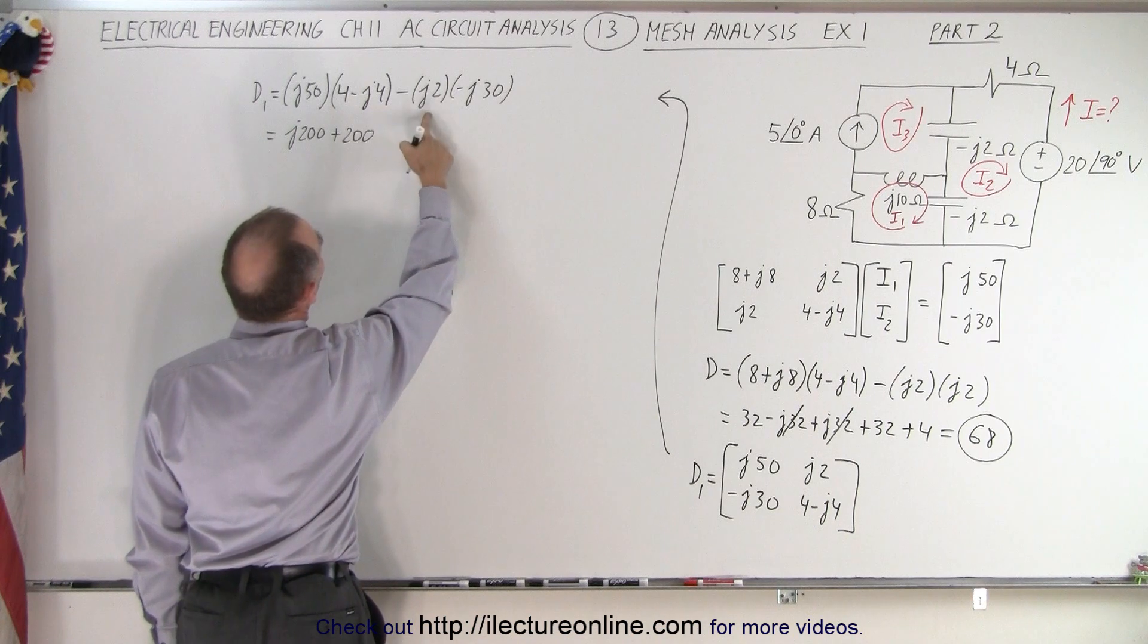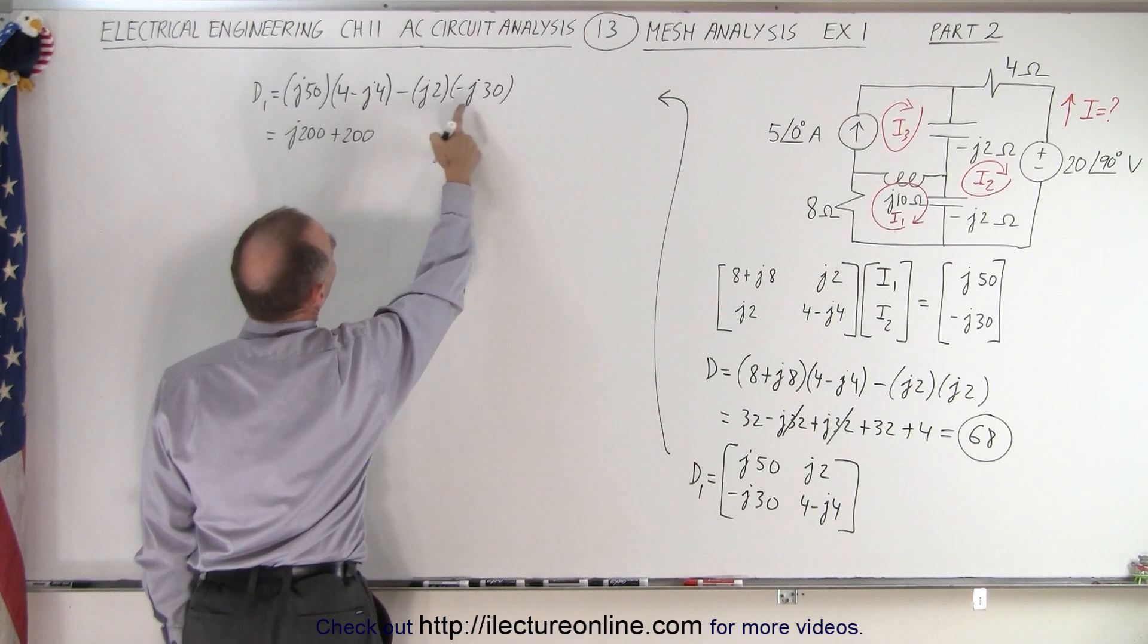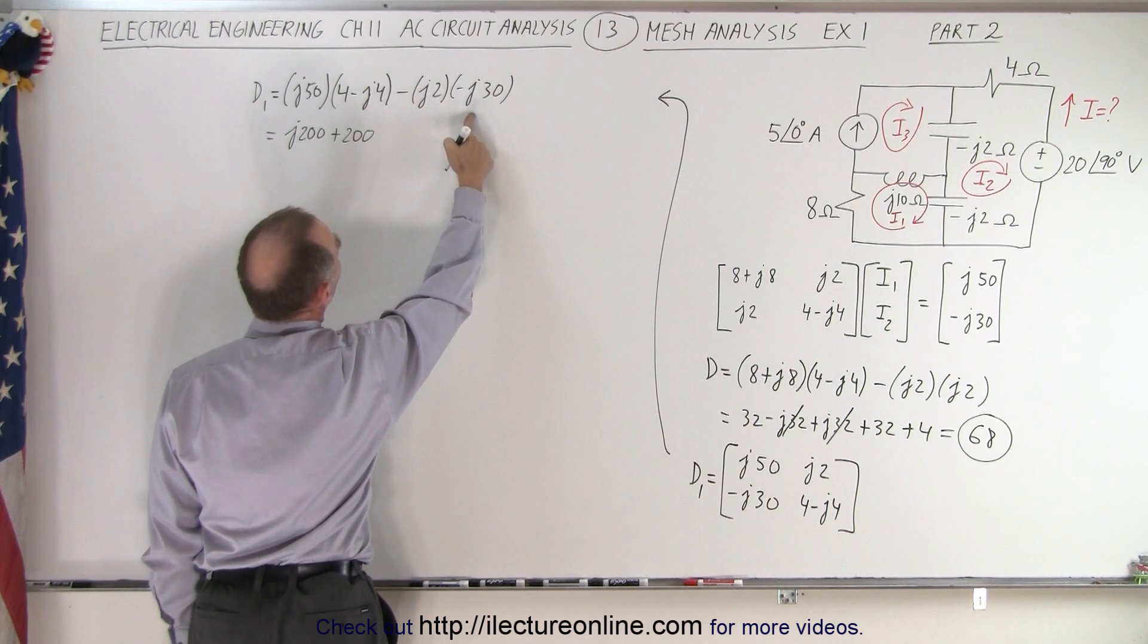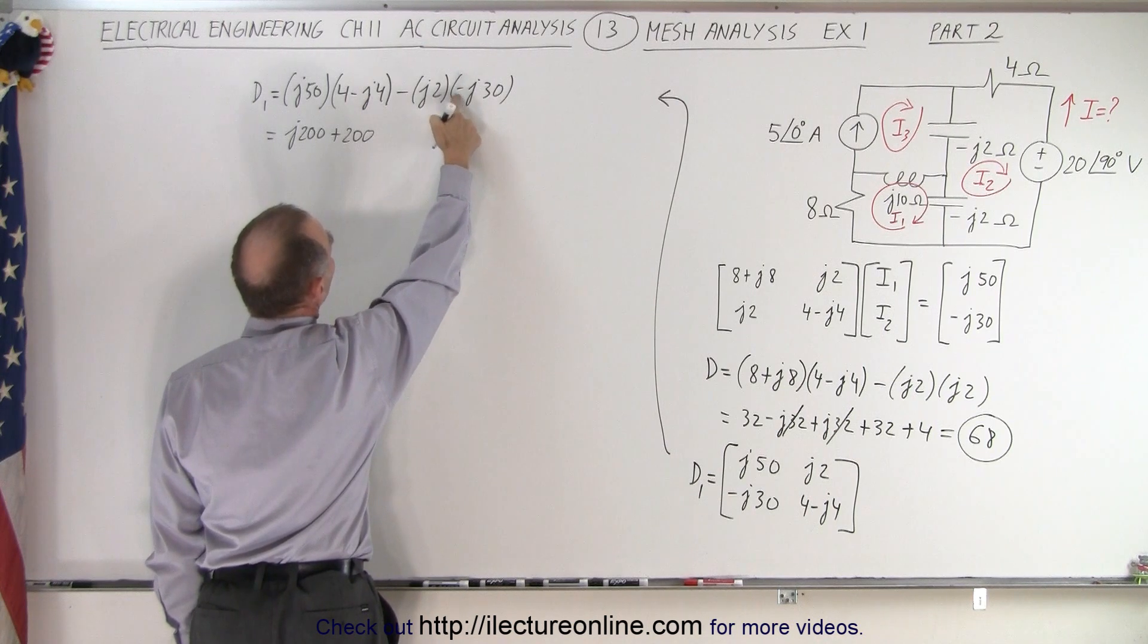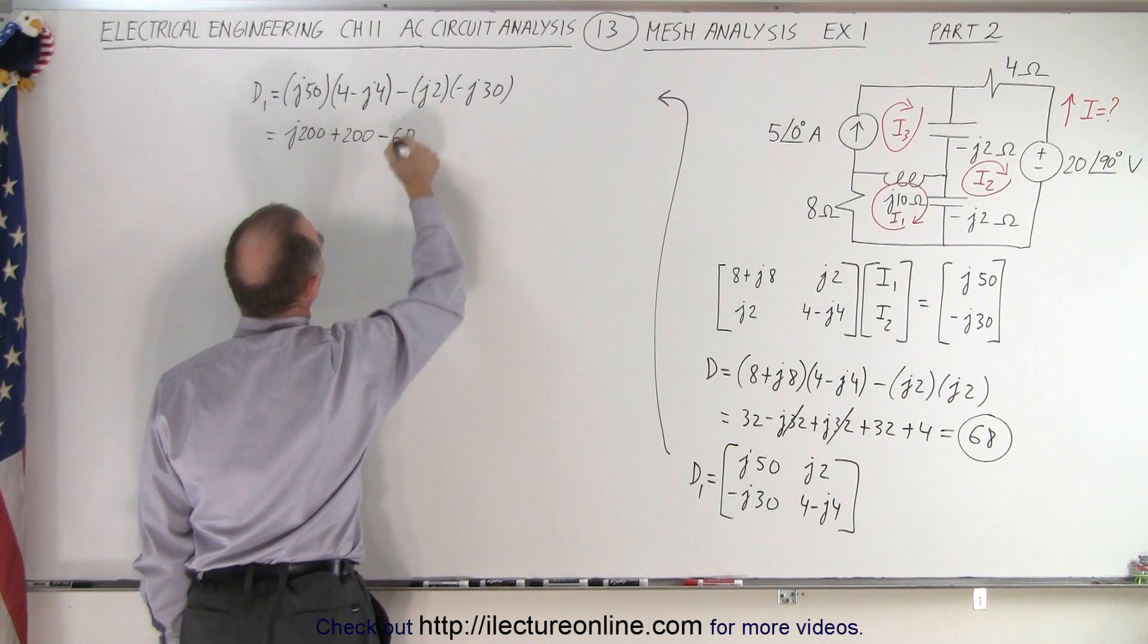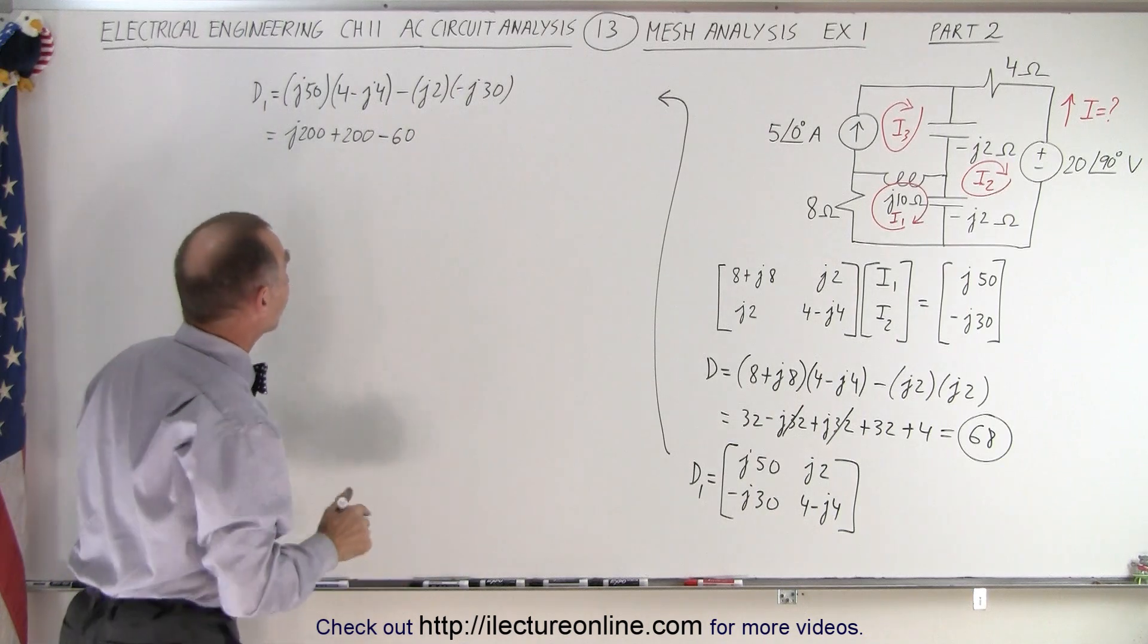And then over here we have minus j, so j2 times a minus that, that's j squared times a minus, that's plus 1, times 60 times a minus, that would be minus 60. Wow, let's do that one again just to make sure.